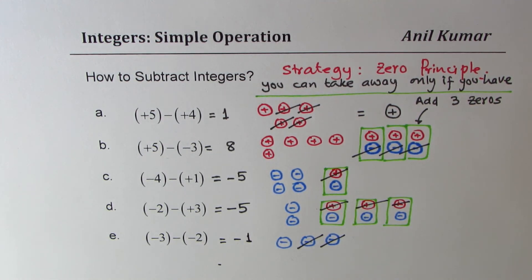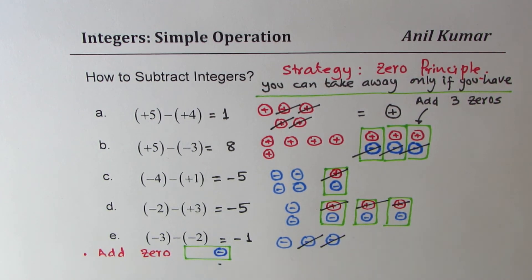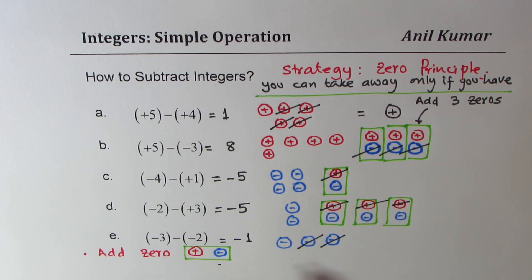So I hope with this you understand the whole concept — our strategy of adding zeros. The first step is to add 0. Now 0 is a combination of positive and negative. Once you add 0, you can take away whatever you want. The key is how many zeros to add. Once you do that, you get your result. I hope this strategy is absolutely clear. Feel free to write your comments and share your views. If you like and subscribe to my videos, that would be great. Thanks for watching and all the best.